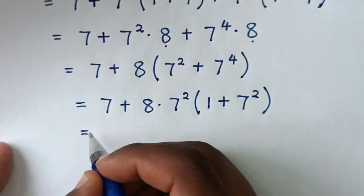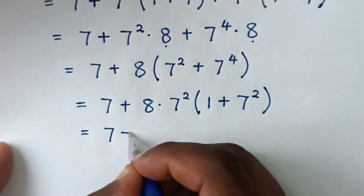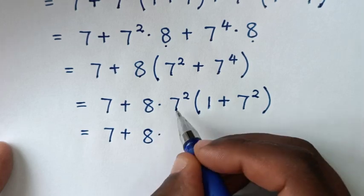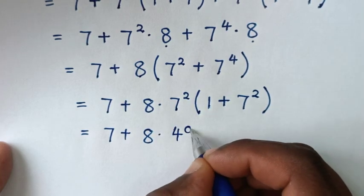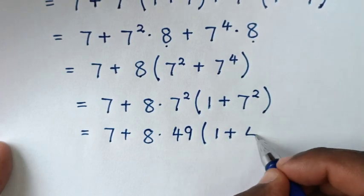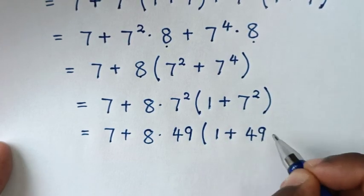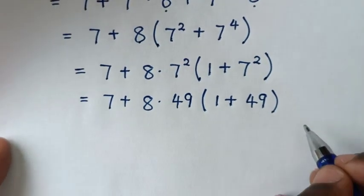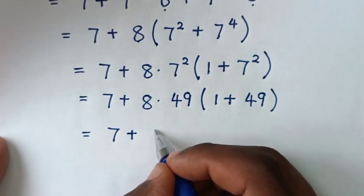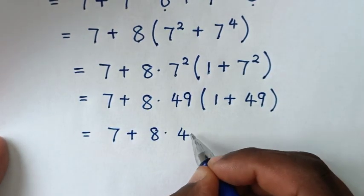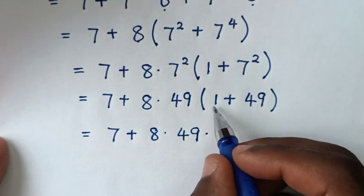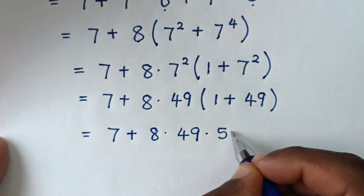Then it will be equal to 7 plus 8 — the exponent will change into a number — so 7 square is 49, then bracket 1 plus 7 square is 49, bracket. Then it will be equal to 7 plus 7 plus 8, then times inside the bracket 1 plus 49, which is 50.